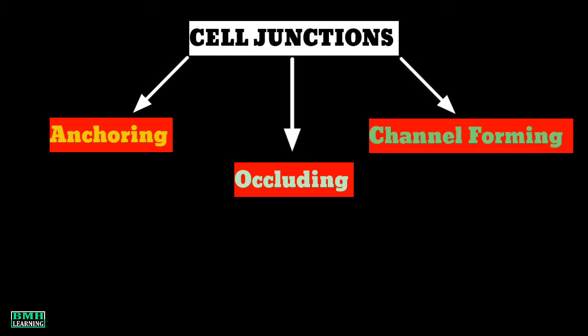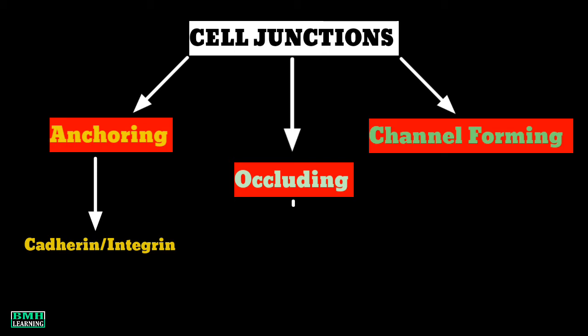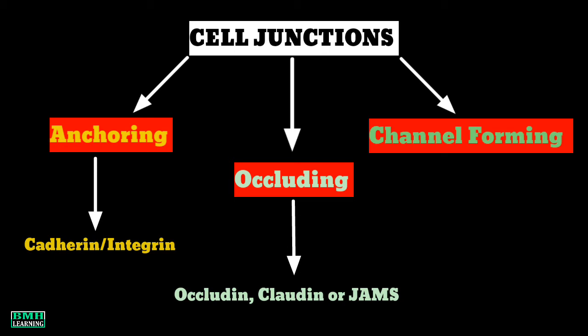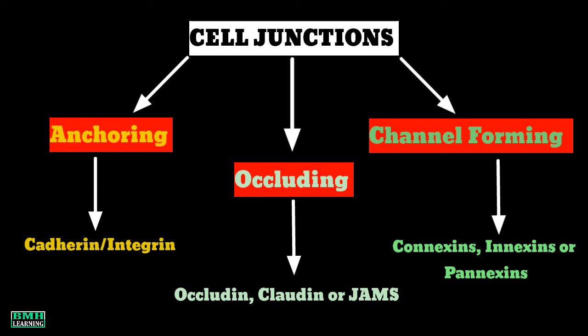Each of these categories possesses different cell adhesion molecules or adhesion receptors. Anchoring junctions can have either cadherin or integrin. Occluding junctions have occludin, claudin, or JAMs — that is, junction adhesion molecules. Channel-forming junctions have connexins, innexins, or pannexins as cell transmembrane linker proteins, or simply connexins. Now let's look at the subdivisions of these junctions.